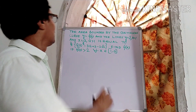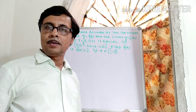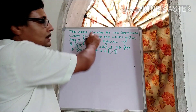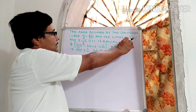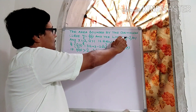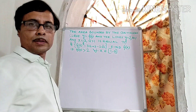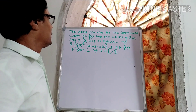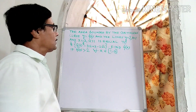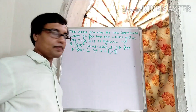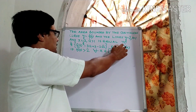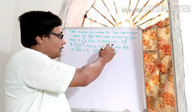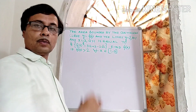Welcome, friends. Here we are going to solve a very interesting problem. The problem is: find the area bounded by the continuous curve y = f(x) and the lines y = 2, x = 1, and x = a, where a > 1. The value of the bounded area is given as a specific quantity. We have to find the function f(x), given that f(x) > 2 and x belongs to the closed interval [1, a].